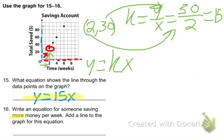Like, let's just double it. So the equation would be y equals 30x.